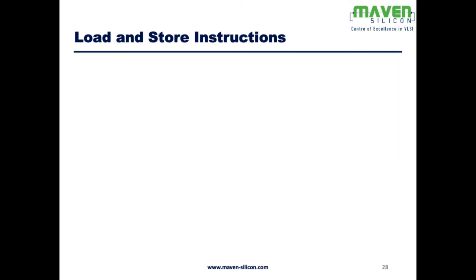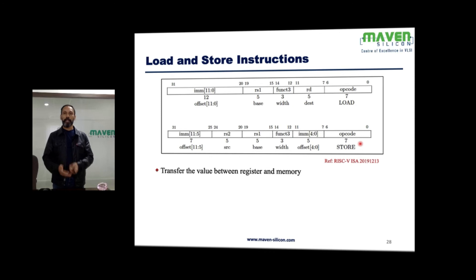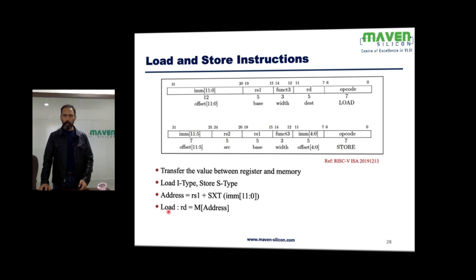Load and store instructions are used primarily to deal with memory. We use load to read values from memory and store to write values back into memory. Load is of I-type; store is of S-type. The address is always calculated using both rs1 and the sign extension of the immediate value — we extend the 12-bit immediate to 32 bits because rs1 is a 32-bit source register, so the address is rs1 plus the sign extension of the immediate value.